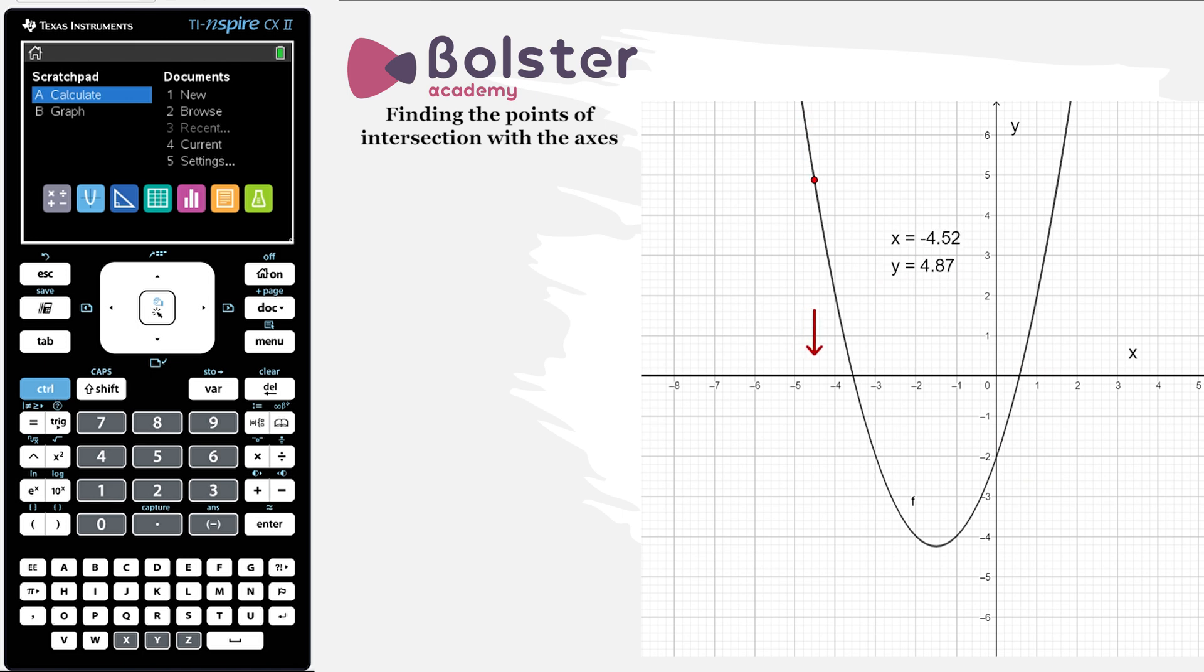Similarly, when we're looking for the y-intercept, as we get closer and closer to the intersection point with the y-axis, x is getting closer and closer to zero. And when we actually arrive at the y-intercept, the x value is equal to zero.